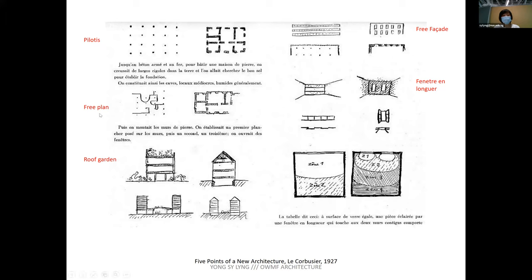The free facade is related to the free plan. Before, you couldn't take too many bricks out of a load-bearing brick wall, so windows were small and elongated vertically. But now he can have end-to-end windows because the facade is just a plane hanging on the structure — it no longer takes load. To this day we have glass cladding based on this principle.